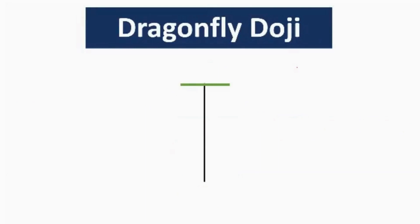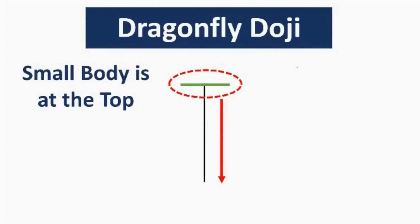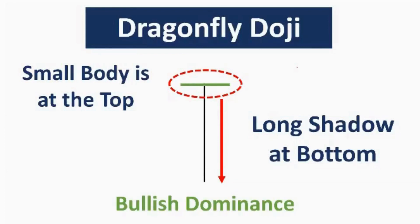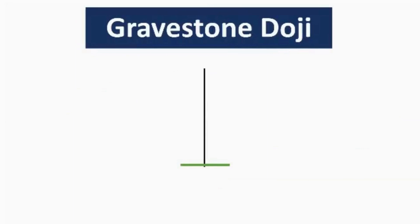The third type is the dragonfly doji. In this pattern the small body of the candle is at the top, with a very long wick or shadow at the bottom. This type of doji indicates bullish dominance in the market. Unlike a regular doji where market sentiment is 50% bullish and 50% bearish, the dragonfly doji's dominance is slightly tilted towards buyers — approximately 60% bullish and 40% bearish.